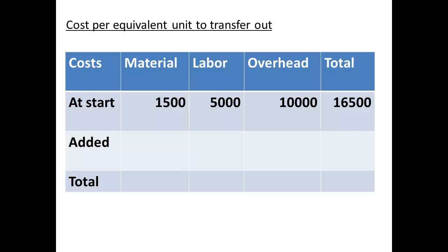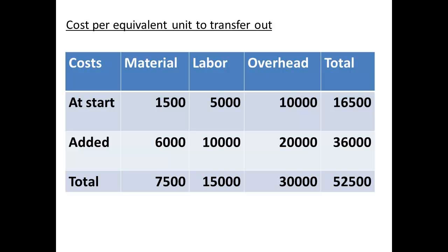Our task is to determine the cost per equivalent unit to use for transferring costs out. We have starting costs of $1,500 for materials, $5,000 labour, and $10,000 overhead, making a total of $16,500. During the period, we have added $6,000 for materials, $10,000 for labour, and $20,000 for overhead. The totals at the end of the period will be $7,500 for materials, $15,000 for labour, and $30,000 for manufacturing overhead, giving a total of $52,500 for the period.